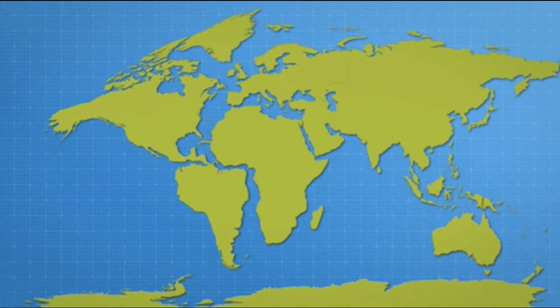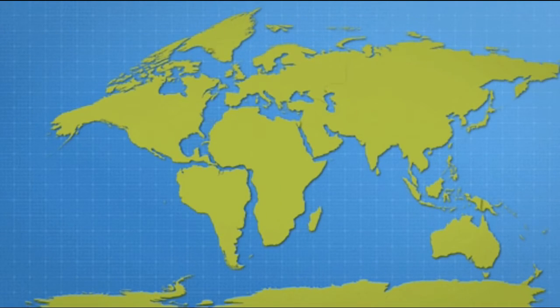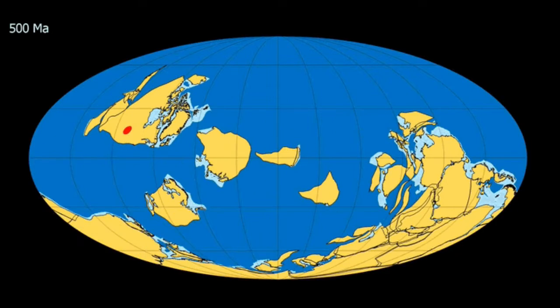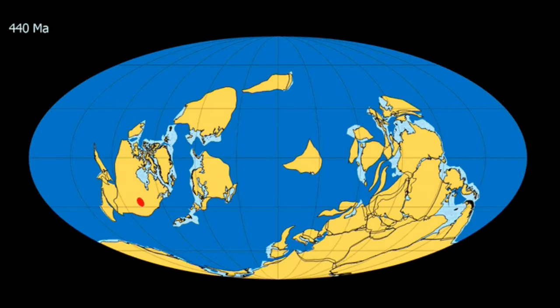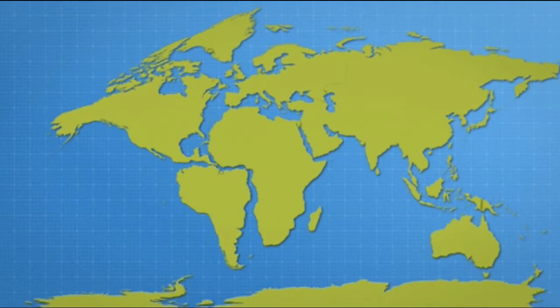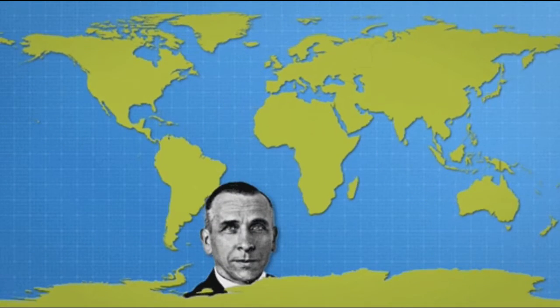This theory basically supports continental drift theory of Alfred Wegener. What makes this theory more special is that it answers that one question which Alfred Wegener failed to explain back then. And that question is, how did the plates move?